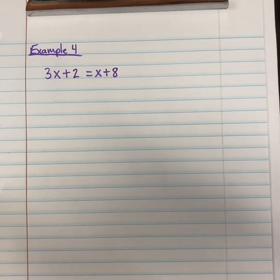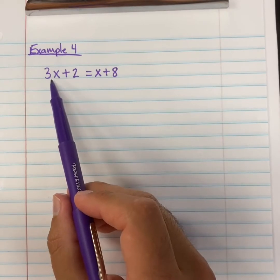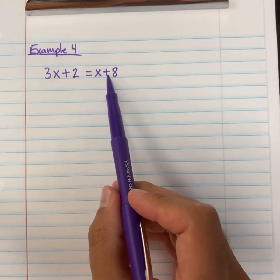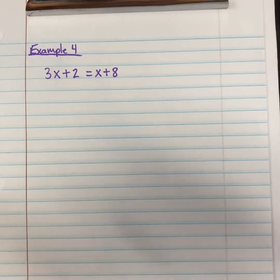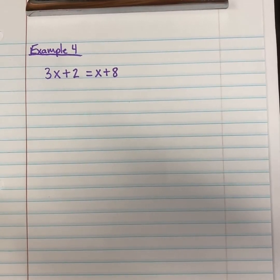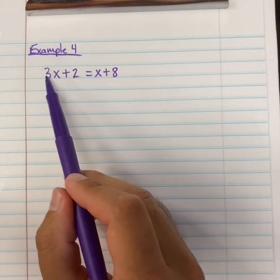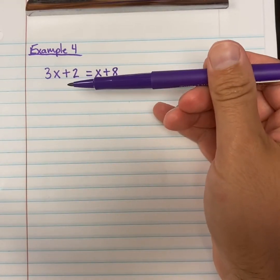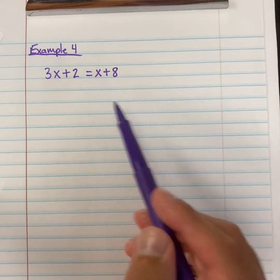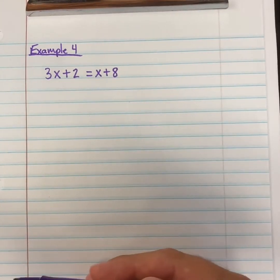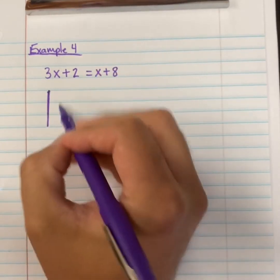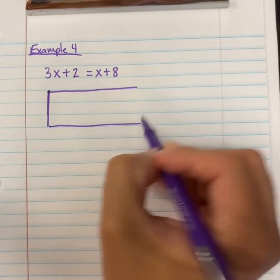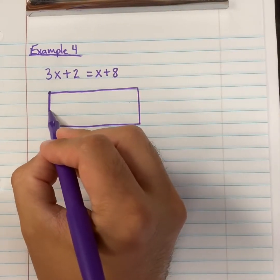Our fourth example is the most important to look at today because it deals with what we're focusing on — solving equations. We are looking at 3x plus 2 is equal to x plus 8. We have variables on both sides of our equation, which is something new. We're going to look at how we can simplify this using the bar model. We're going to begin by drawing the bar model as simply as possible, putting 3x plus 2 on the top and x plus 8 on the bottom, with the equal sign as the line in the middle.